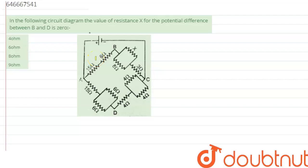In the following diagram, the value of resistance X for the potential difference between B and D is zero. So we need to calculate this resistance value X. Before starting, let's first discuss about Wheatstone network.